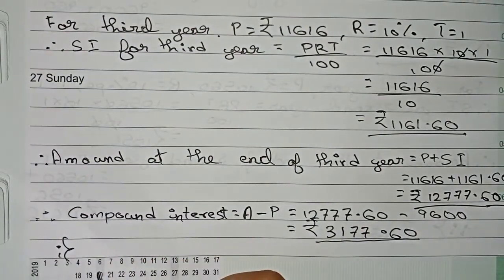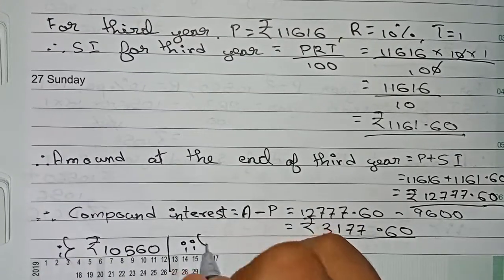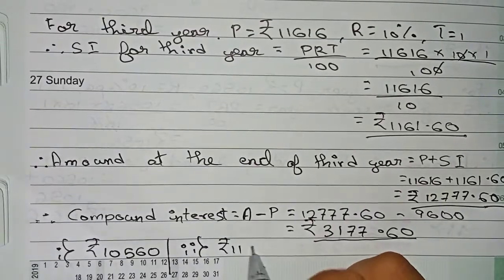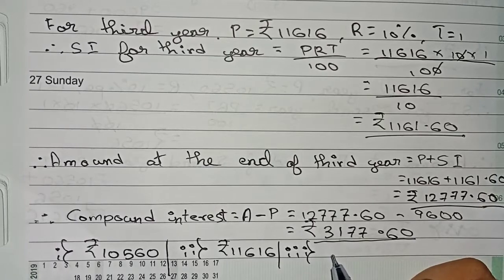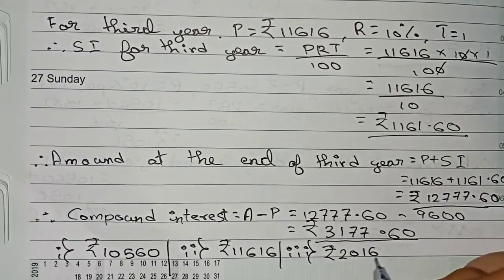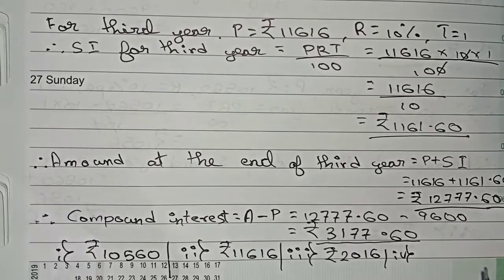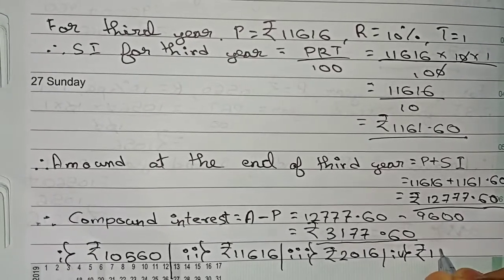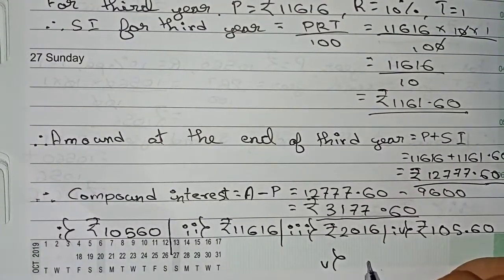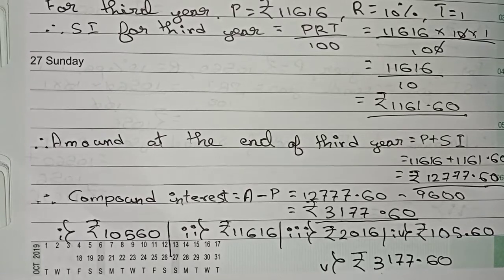To summarize all answers: question one — sum due at the end of the first year — is ₹10,560. Question two — sum due at the end of the second year — is ₹11,616. Question three — compound interest up to the second year — is ₹2,016. Question four — interest on the difference — is ₹105.60. Question five — compound interest for the third year — is ₹3,177.60. Thanks for watching this video, please subscribe to my channel for more solutions.